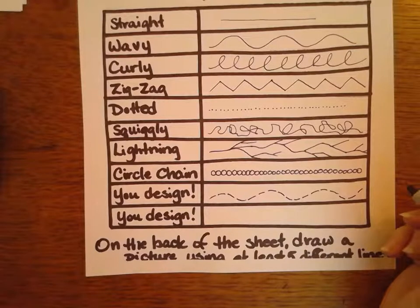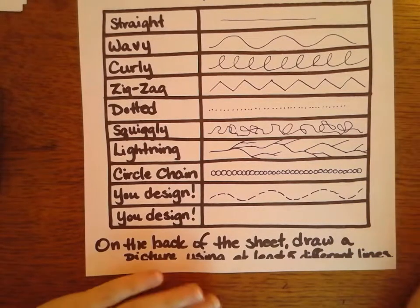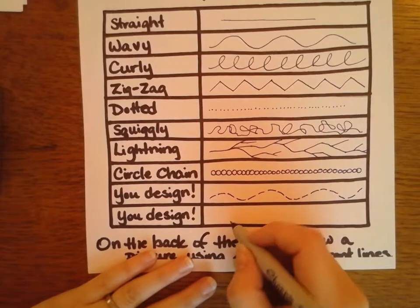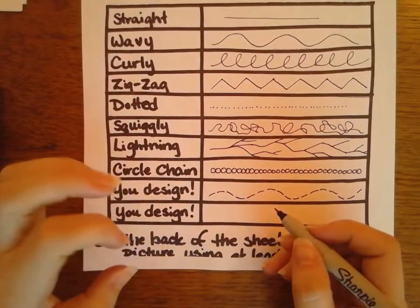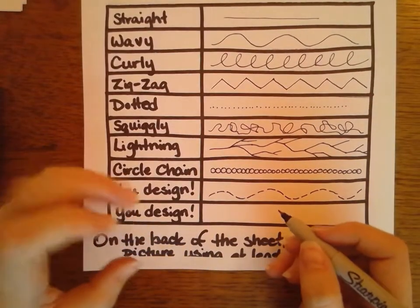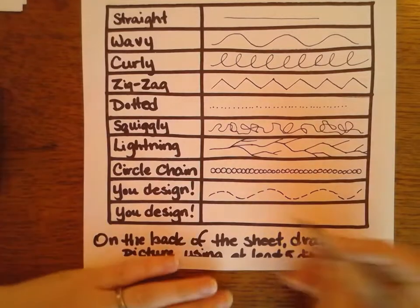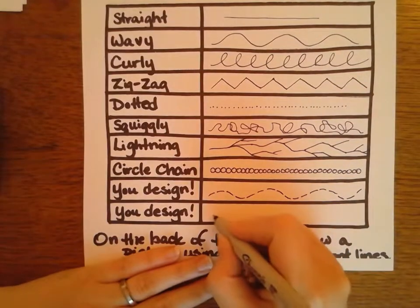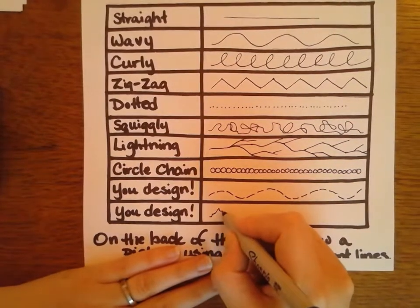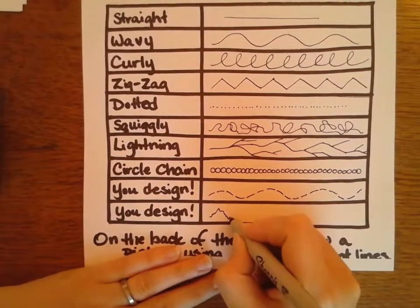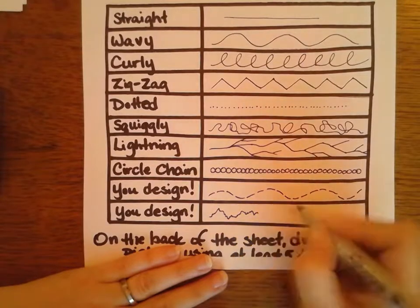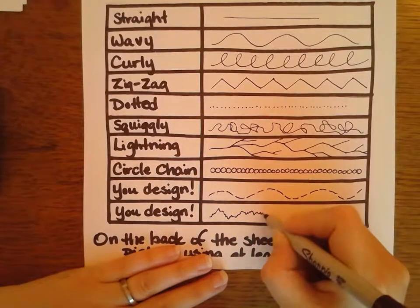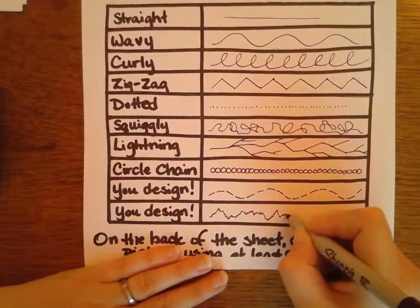Another one that I could do — maybe a tattered edge. Like if I have a really old shirt where it gets really broken up and kind of jagged on the edges. So, kind of like this — little V shapes that are sometimes longer, sometimes shorter.